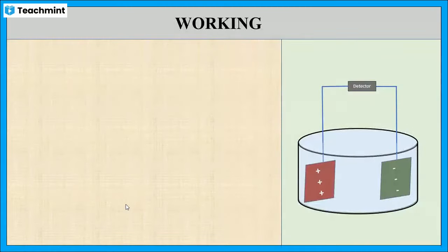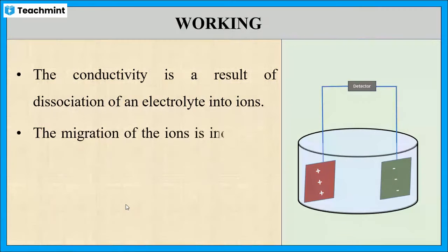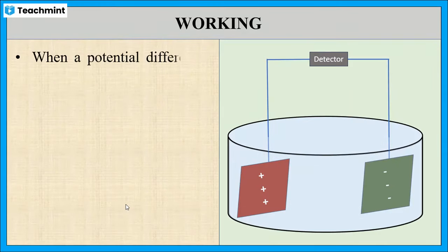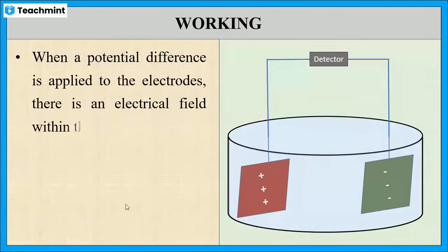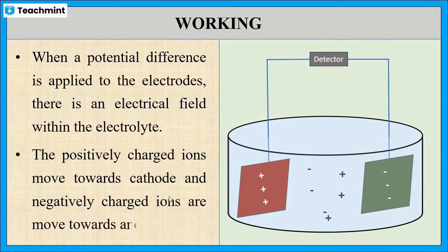Now let us see how conductometric sensors work. Conductivity results from the dissociation of electrolyte into ions which migrate towards oppositely charged electrodes. When a potential difference is applied to the electrodes, there is an electric field within the electrolyte, resulting in dissociation of the electrolyte into positive and negative ions.